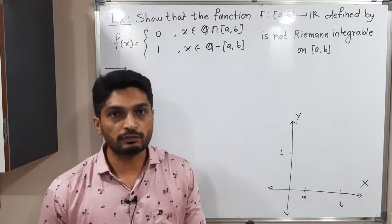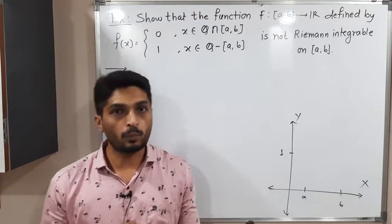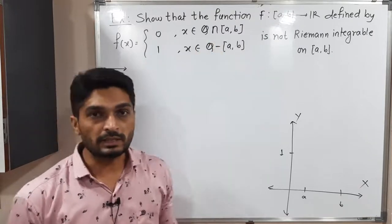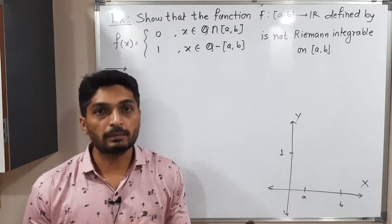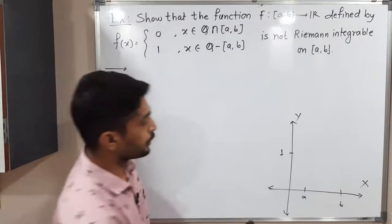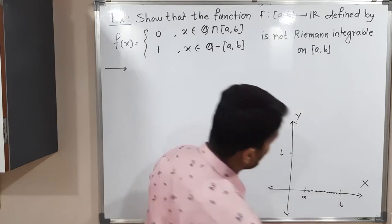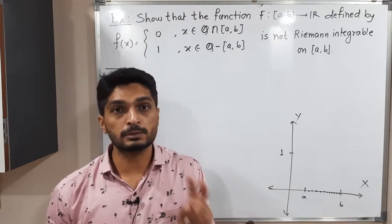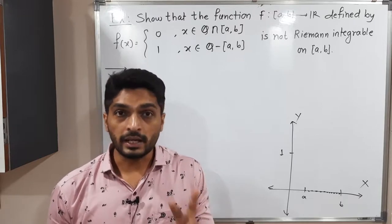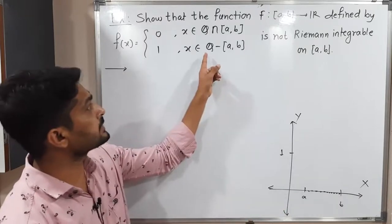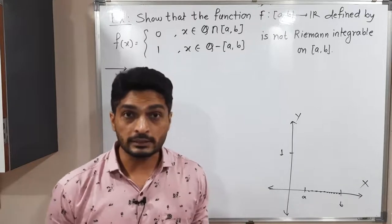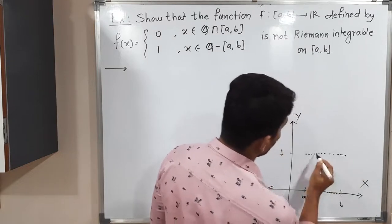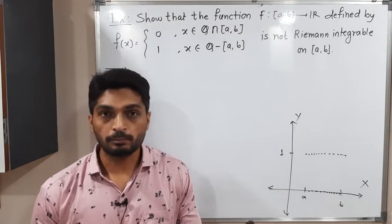Let us try to understand the definition of f first. Function f has two values: 0 or 1. If x belongs to Q ∩ [a,b] — that means all rational numbers which lie between a and b — the value of the function is 0. I have drawn a dotted line since the density theorem says there are irrational numbers between any two rationals, and there are rational numbers between any two irrationals. So for rationals we have 0, and for irrationals — that means for x in [a,b] but not in Q — the value is 1. So the function has only these two values, 0 and 1.